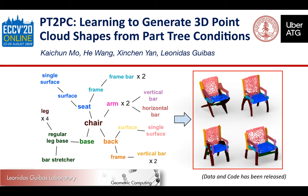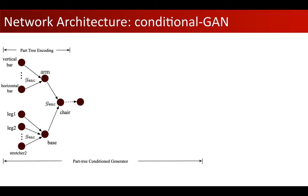We propose a novel conditional GAN framework to tackle this task. For the generator, given the symbolic part tree as input, we first hierarchically abstract structural features in a bottom-up fashion.